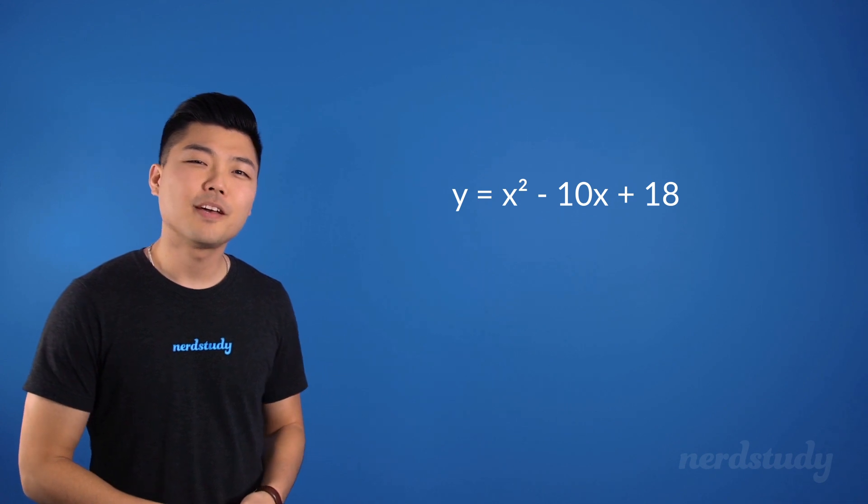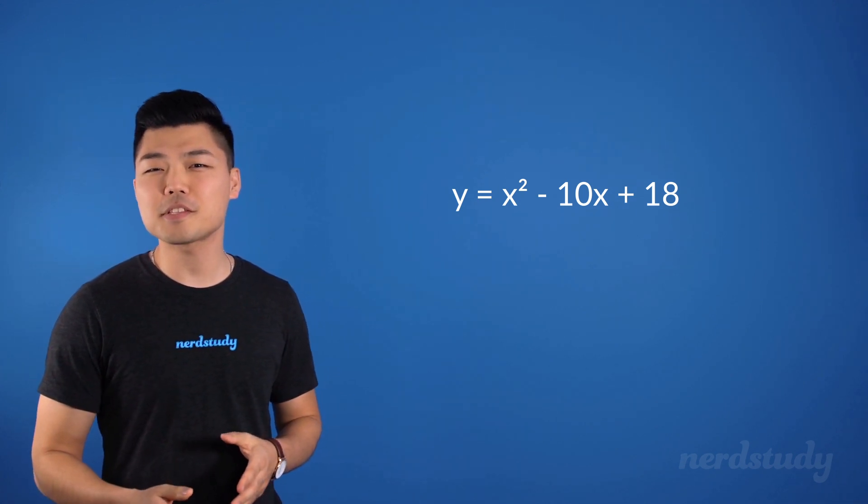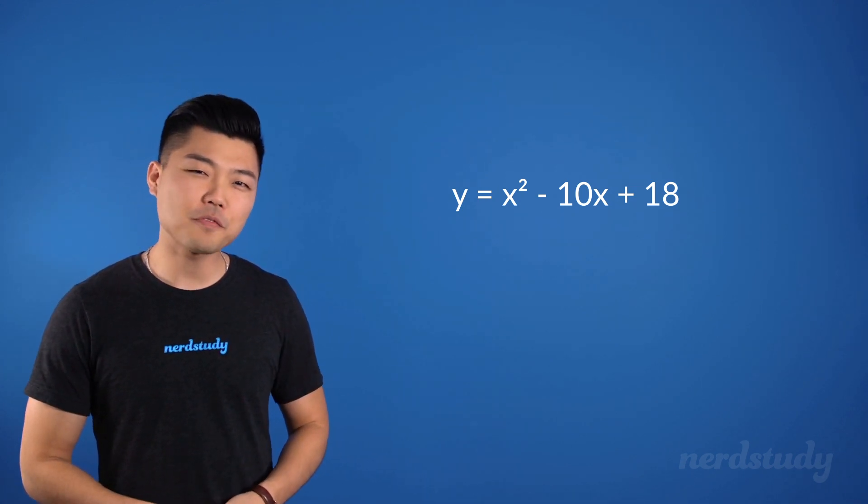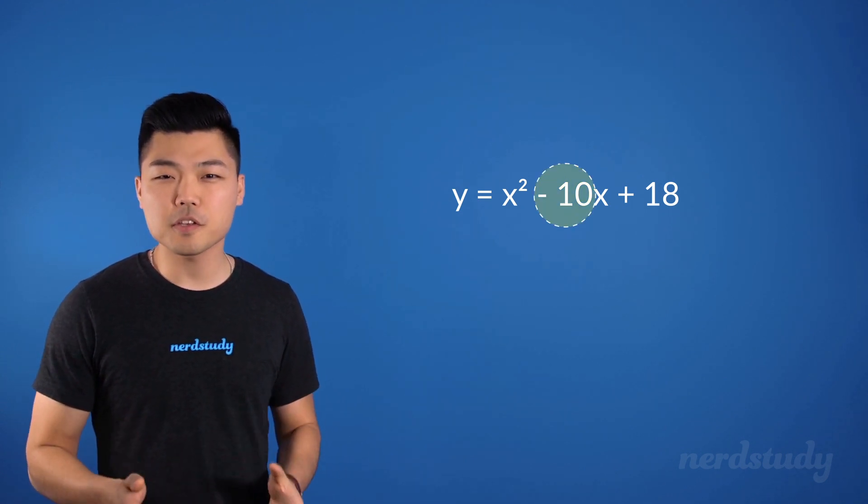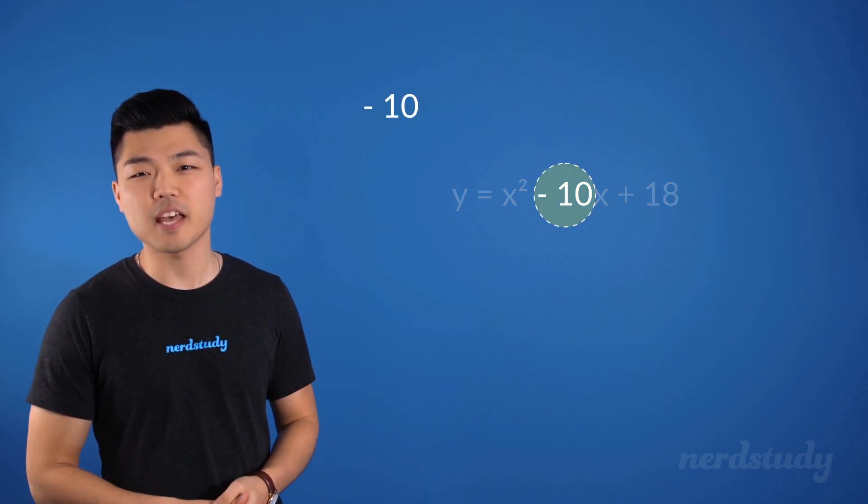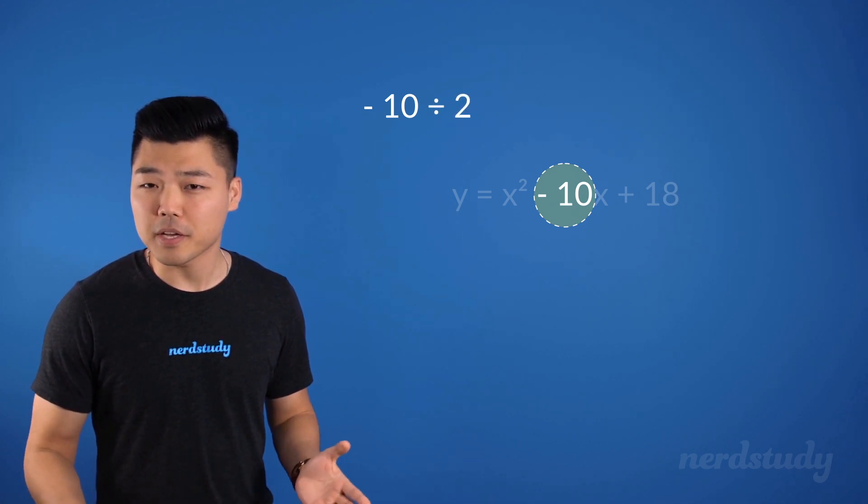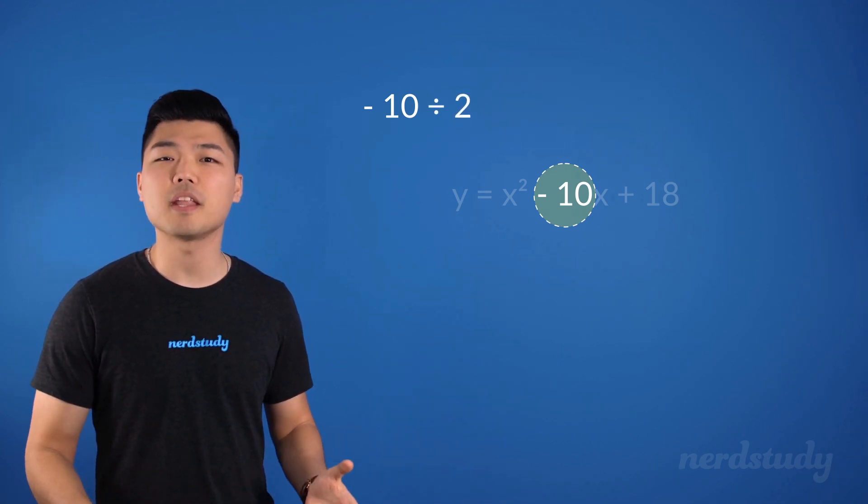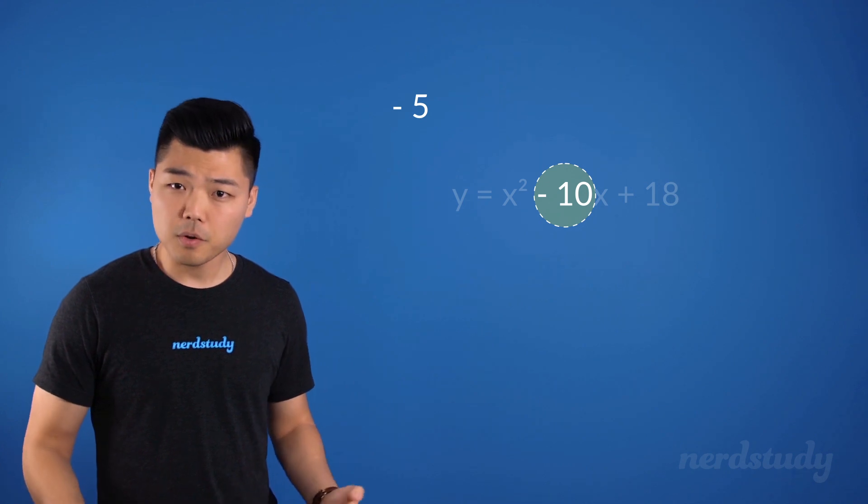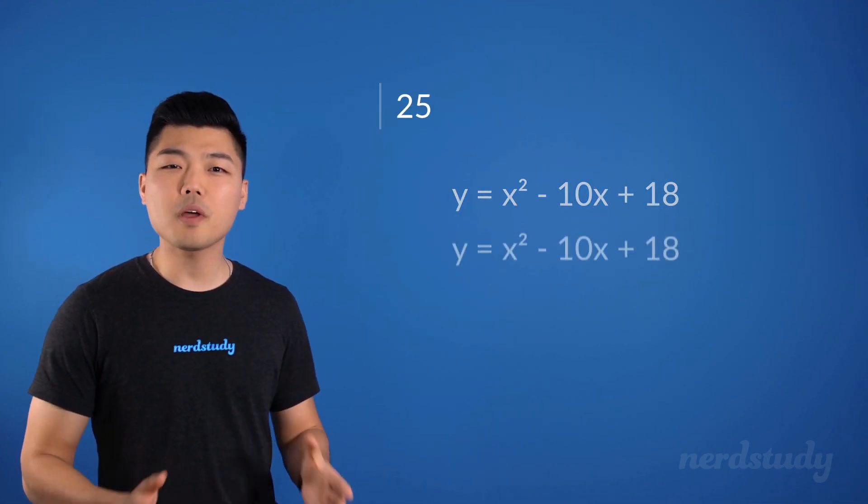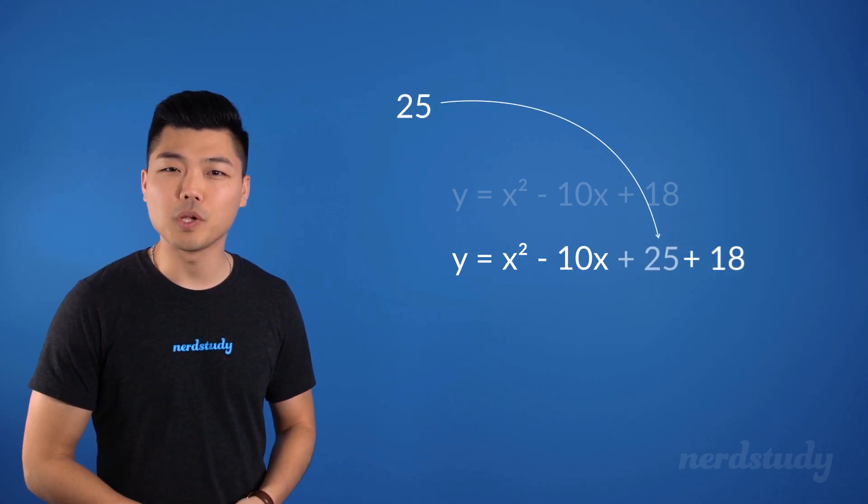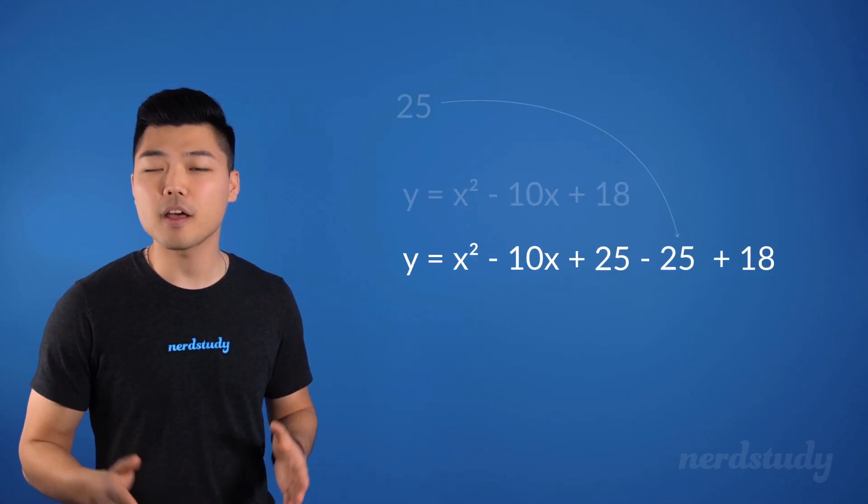Let's try one last example for this video. If we want to take this into the vertex form, all we have to do is complete the squares. Remember, we take this number which is -10 and then we divide it by 2 and we'd get -5. And then we square that number to get 25. So 25 is our number. We'll add and subtract by that right here.